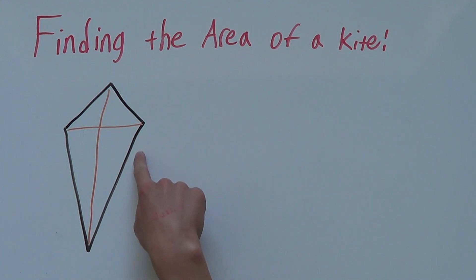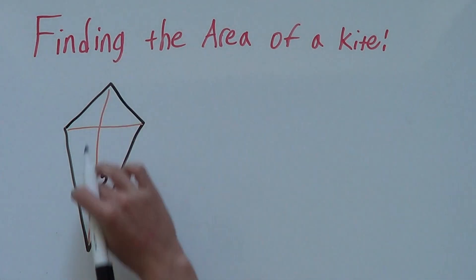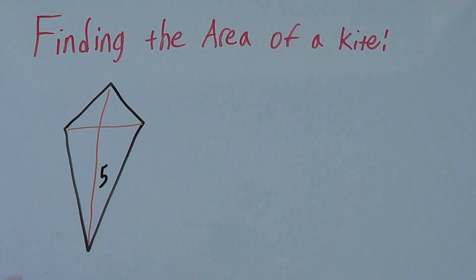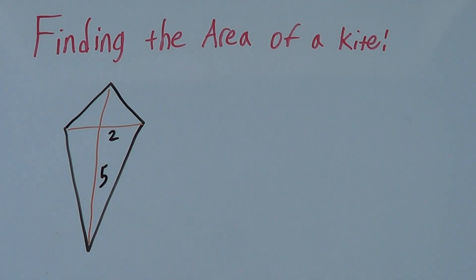A kite looks like this. And if we have one side that's say 5, one diagonal, and another diagonal that's say 2, we can work out the area of this kite.